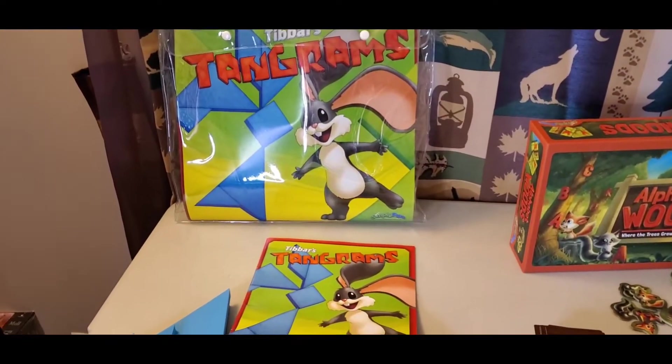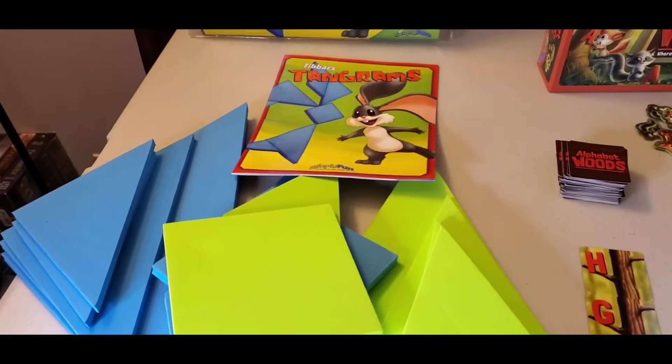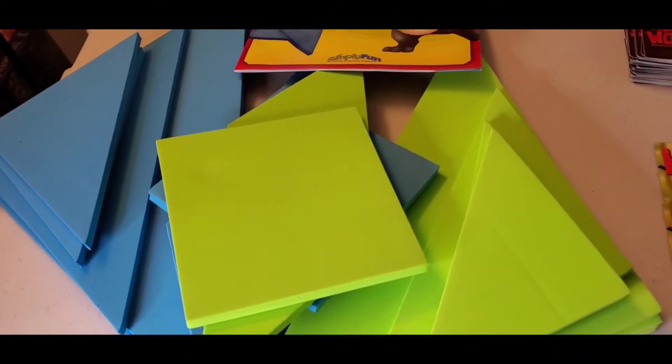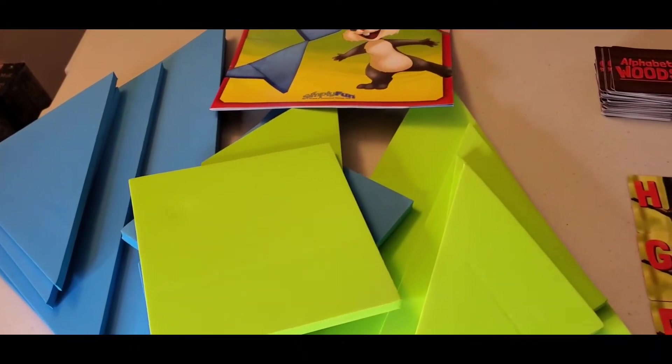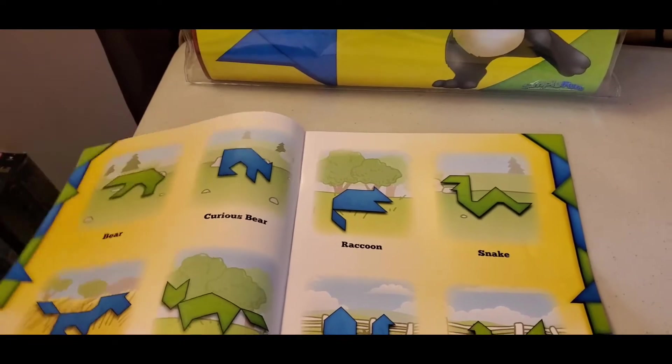Tibber's Tangrams is for ages three and above, one to two players, and it practices shapes and spatial reasoning. This one comes with a set of two floor-sized tangrams and a 32-page booklet that shows lots of designs for your kids to try and figure out.